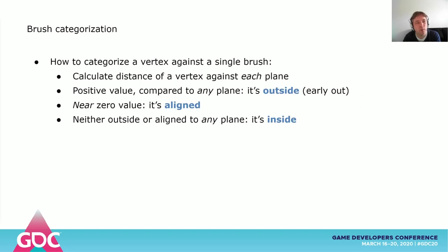Before we get to polygons, let's start smaller. How would you categorize a single vertex against a single brush? We simply compare the vertex against all the planes of a brush. If it's outside any of these planes, it's outside. Otherwise, it's inside or aligned. It can be aligned if it's near one of the planes of a brush — when I say near, I mean within a certain tolerance. You can't use exact values here due to floating point precision.